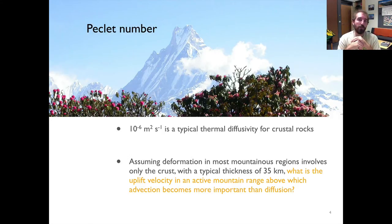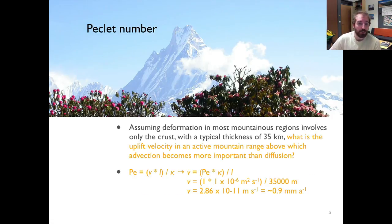So the question is what velocity is required for advection to become more important than diffusion. Go ahead and pause the video and do your calculation and come back when you've got an idea. All right, let's see how you've done. The basic idea here is pretty simple. We have our Peclet number equation that we've just seen: v times l over kappa. What we want to do then is solve for v. So this is simply the Peclet number times kappa divided by l.